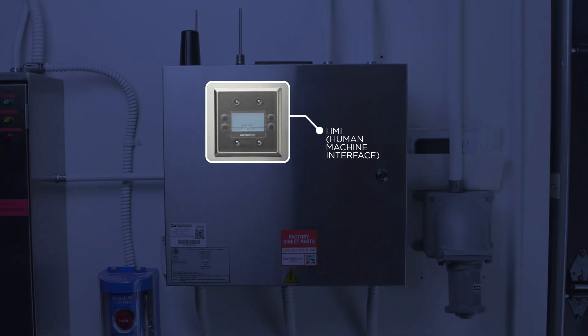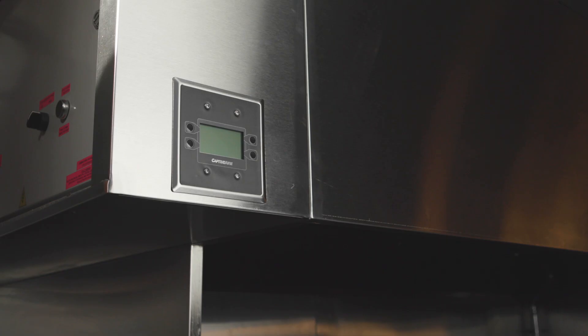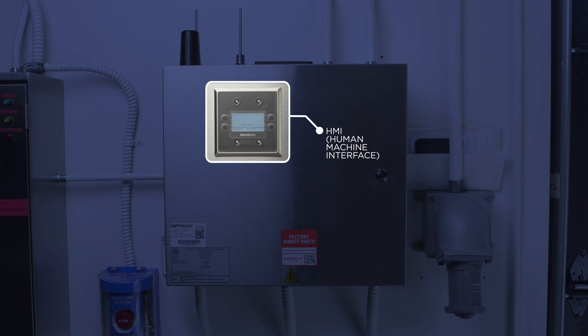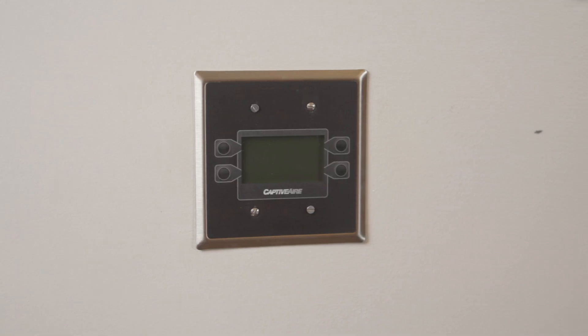In every control package, you'll find an HMI and a circuit board. The HMI is typically located on the front of the exhaust hood, but in some cases, it may be mounted on the door of the control package. If needed, the HMI can be mounted in a two-gang box on the wall for better access.